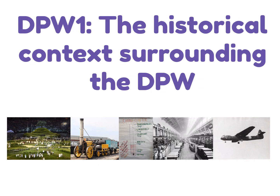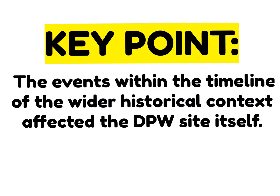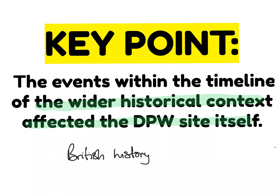In this video we're going to focus on the historical context surrounding the Doncaster Plantworks. It's really important that we understand the timeline of when the Plantworks was initially created and understand the key events in Britain that ran alongside Doncaster Plantworks own. That will help us to understand why it developed the way it did. A key point right from the very beginning is that the events within Britain's wider historical context affected the Doncaster Plantworks itself — the events within British history helped to shape what happened to the Plantworks itself.